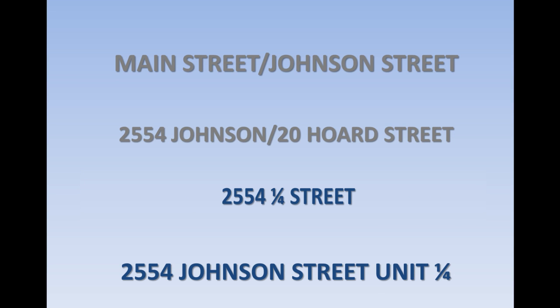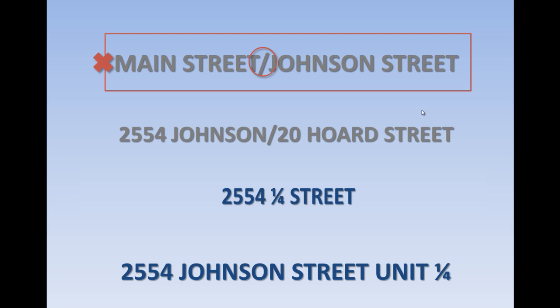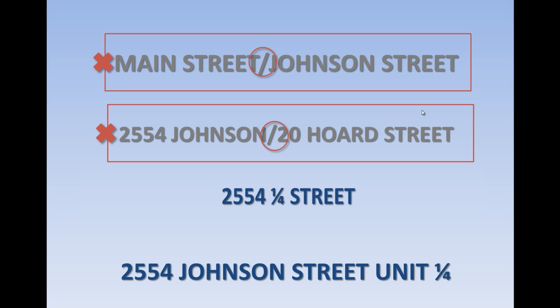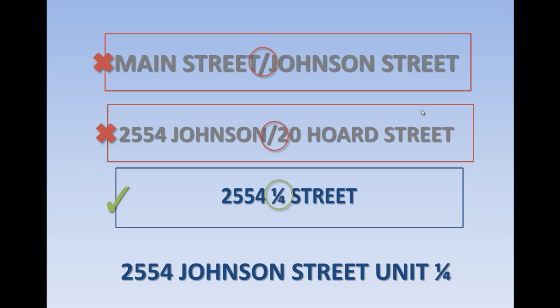Let's talk about forward slashes. Forward slashes can be indicative of several unacceptable addresses, including street intersections such as Main Street slash Johnson Street, which annotates the intersection of two streets and is not a parcel site address adhering to the parcel schema. Similarly, multiple site address listings such as 2554 Johnson Street slash 20 Hoard Street, which annotates two addresses, is also not acceptable. Forward slashes can be acceptable in some cases, such as fractional street names, which are an acceptable use of the forward slash. Other acceptable examples include fractionals in the unit ID, such as 2554 Johnson Street, Unit 1/4, which is an acceptable address.